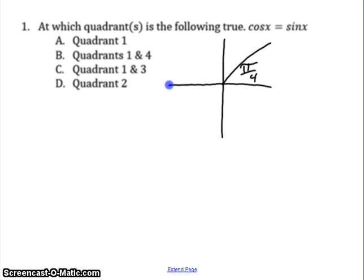They both have the value radical 2 over 2, and everything is positive in quadrant 1.